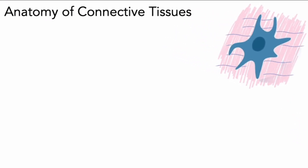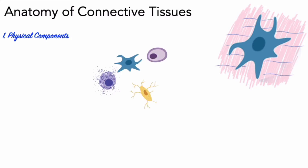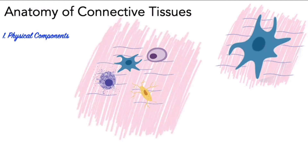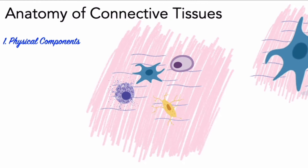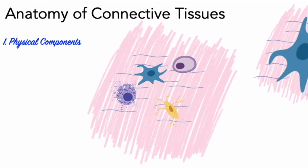When it comes to the anatomy of a connective tissue, there are four notable characteristics. First, the physical components. All connective tissues have three basic physical components: cells, protein fibers, and a ground substance. Connective tissues present a wide variety of cell types, including cells that are very highly specialized in function. The bulk of the volume of connective tissue is not its cells, but the products those cells make and secrete — namely, the protein fibers and their ground substance.